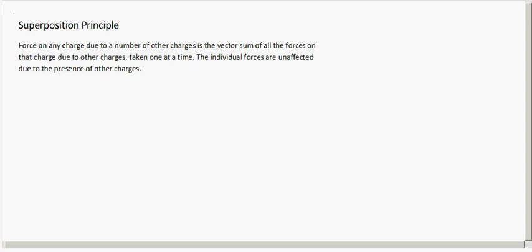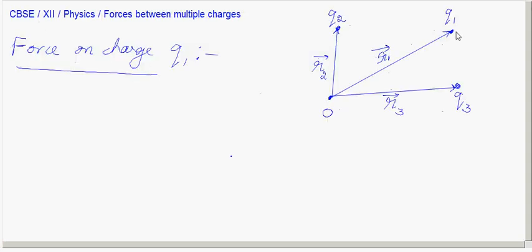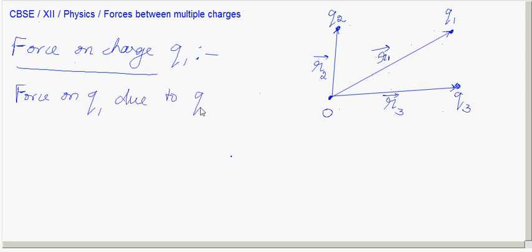To find the force on Q1, first consider only Q2 and find the mutual force between Q1 and Q2. Next consider only Q3 and find the force between Q1 and Q3. Then add them vectorially.